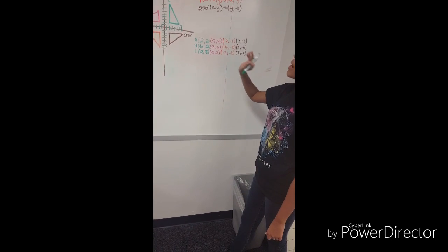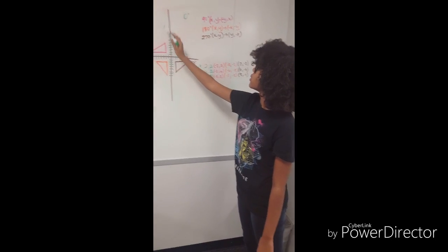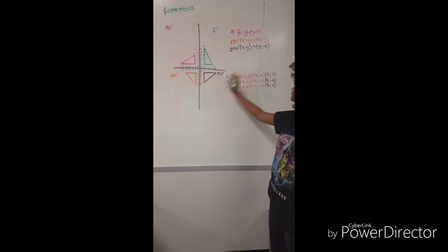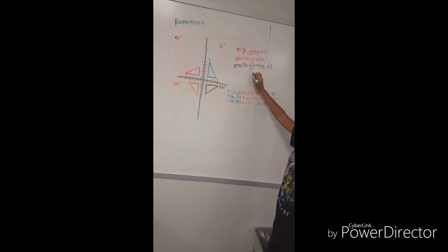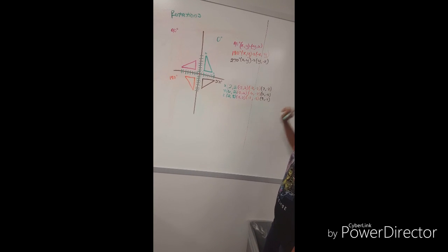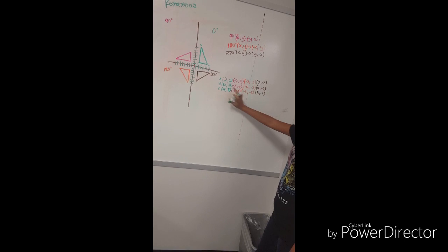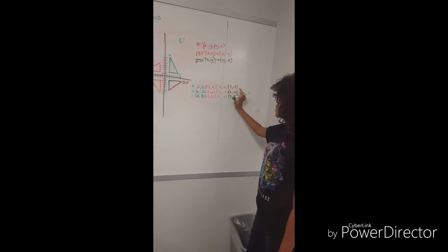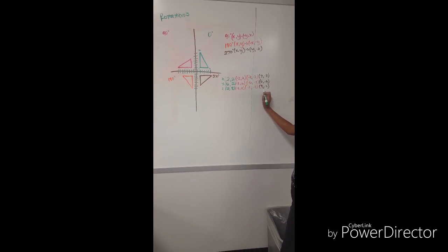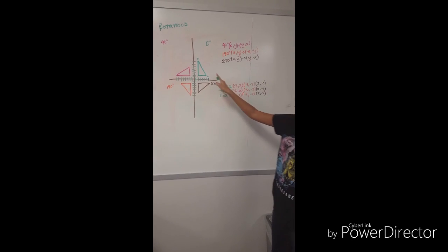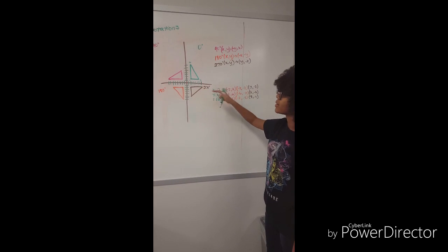And the last rotation is if you rotate it 270 degrees, it will become from x, y to y, negative x. So then your coordinate 2, 2 will become 2, negative 2. 6, 2 will then become 2, negative 6. And 2, 8 will become 8, negative 2. And that's them rotating all across the axis.